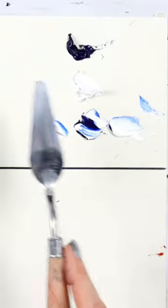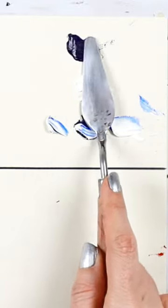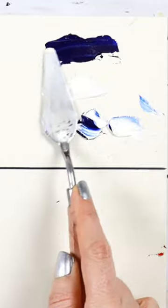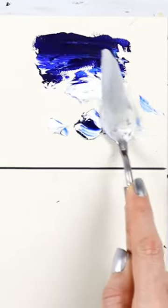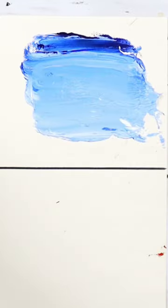I'm going to mix these two colors, ultramarine blue and white, by making these left and right motions. I'm going to move slowly from top to bottom. I think this would be a great technique for sky.